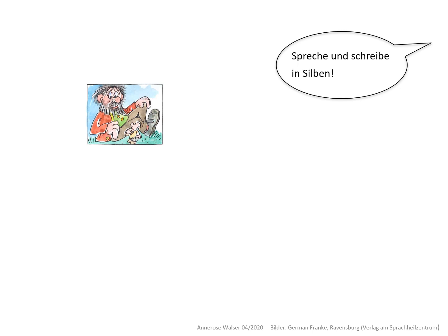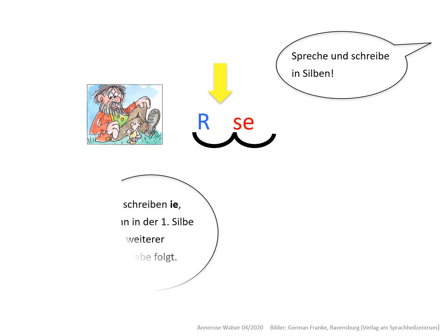Riese. Spreche und schreibe in Silben. Wir schreiben IE, wenn in der ersten Silbe kein weiterer Buchstabe folgt. In der ersten Silbe steht das R und das IE. Es kommt kein weiterer Buchstabe in der ersten Silbe. Deshalb das IE.